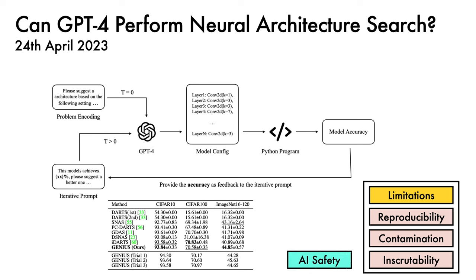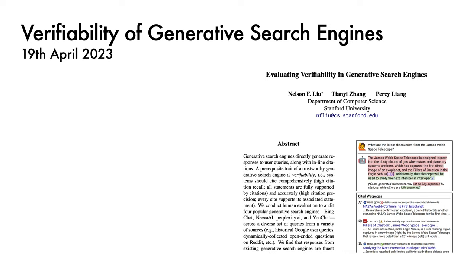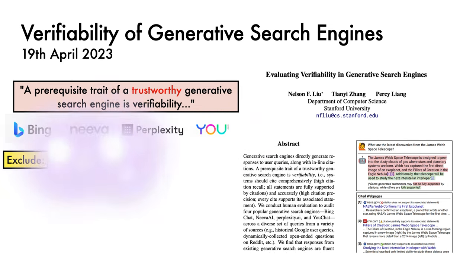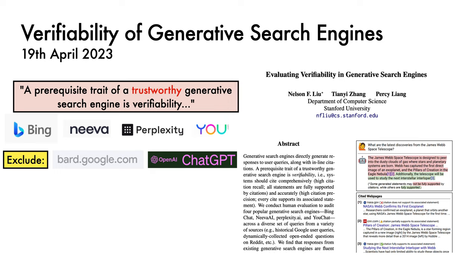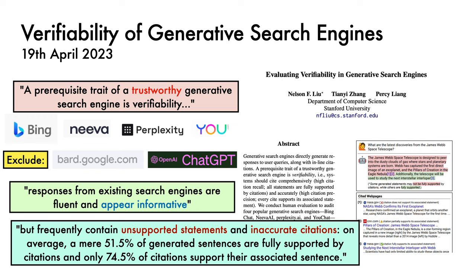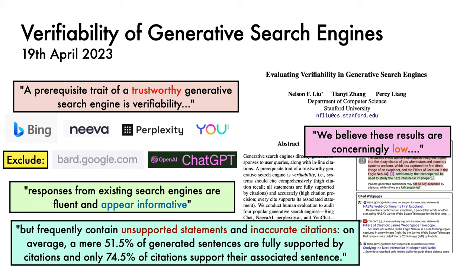The paper notes that the search results may have implications for AI safety. Next, we have a work on evaluating verifiability in generative search engines from Liu, Zhang, and Liang at Stanford. The authors note that a prerequisite trait of a trustworthy generative search engine is verifiability. They evaluate Bing Chat, Neeva AI, Perplexity AI, and YouChat, excluding Google's Bard and OpenAI's ChatGPT since they do not provide citations. It is found that responses are fluent and appear informative, but frequently contain unsupported statements and inaccurate citations. On average, a mere 51.5% of generated sentences are fully supported by citations, and only 74.5% of citations support their associated sentence — results the authors describe as concerningly low.